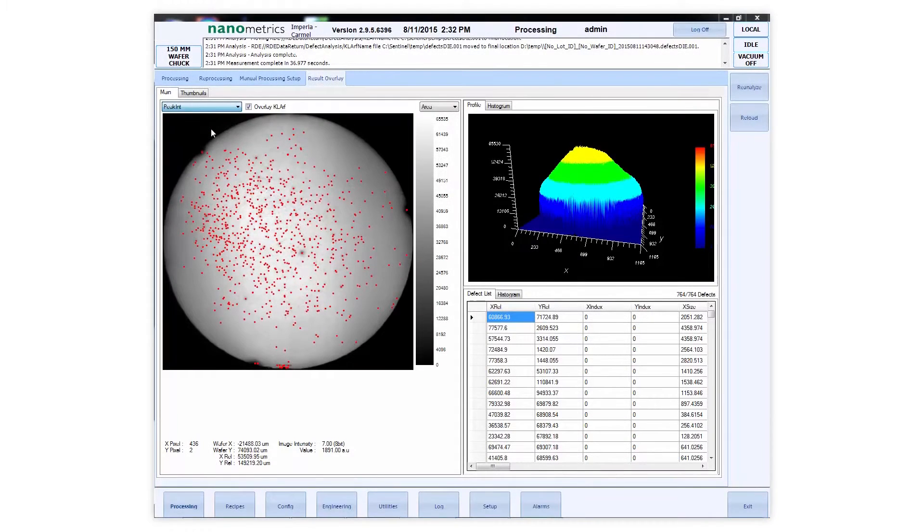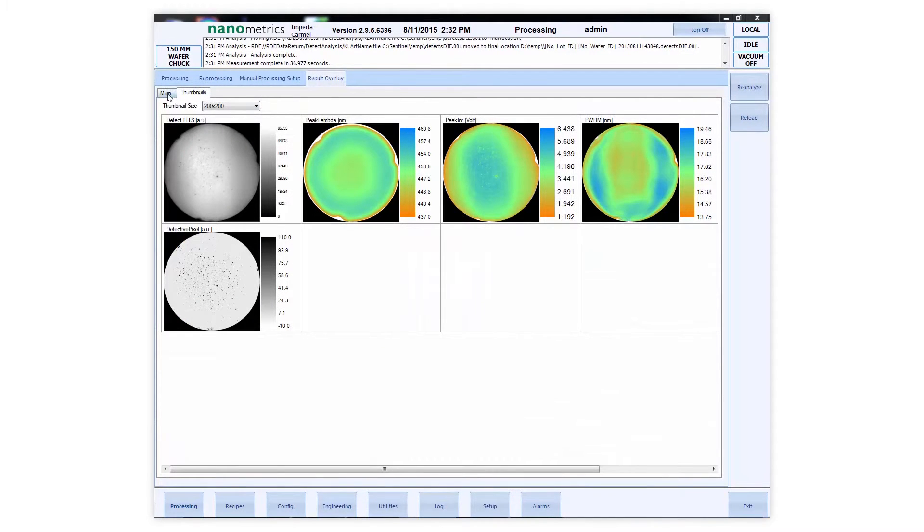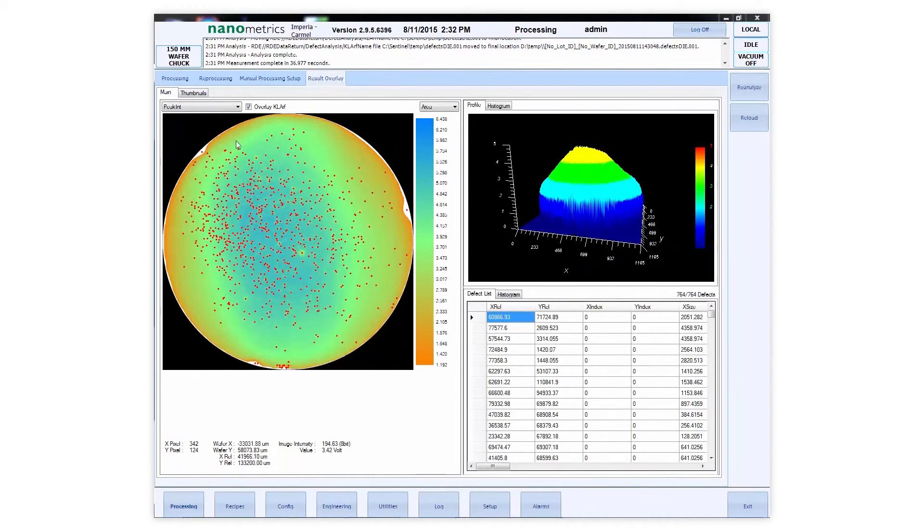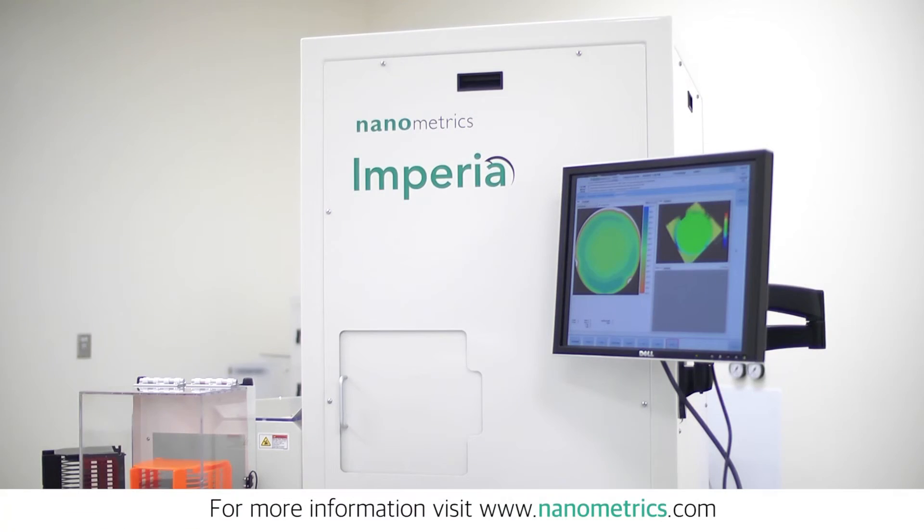The Imperia definitively distinguishes yield-killing defects from nuisance defects by contrasting traditional darkfield images with the electrically active defect PL images, providing the PL process control benefits of wafer platter uniformity and tighter binning yield. For more information about the Imperia, visit nanometrics.com.